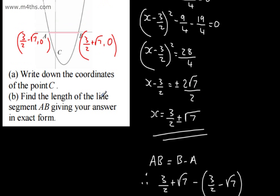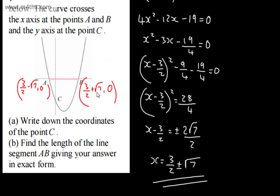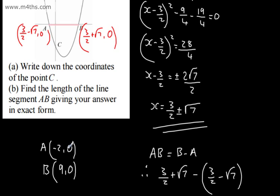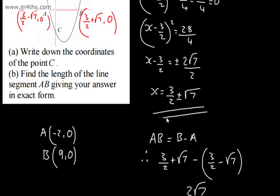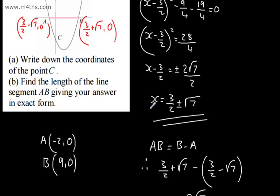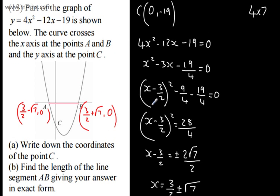So that's in exact form as it's left as a surd, and we simply subtracted one from the other. For example, if A had been -2, 0, and B had been 9, 0, to find the distance, 9 subtract -2 is 11. Or they've got a difference of 11 units in their distance. So that's one way of doing it. You could have used the quadratic equation, but as stated, this would be a non-calculator question.